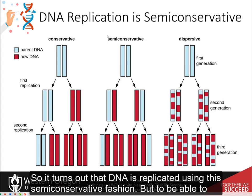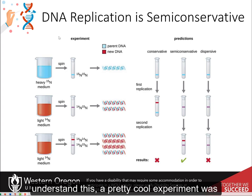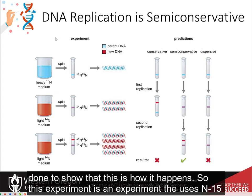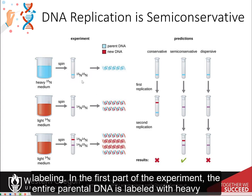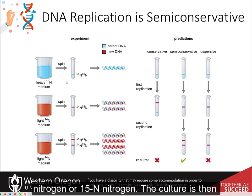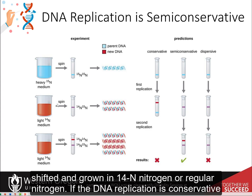It turns out that DNA is replicated using a semi-conservative fashion. To understand this, a pretty cool experiment was done to show how it happens. This experiment uses N15 labeling. In the first part of the experiment, the entire parental DNA is labeled with heavy nitrogen, or 15N. The culture is then shifted and grown in 14N, or regular nitrogen.